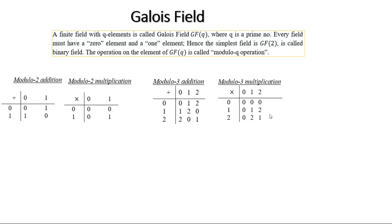We can perform modulo 3 multiplications. For example: 0 into 0 is 0, 0 into 1 is 0, 1 into 0 is 0, 1 into 1 is 1, 1 into 2 is 2, 2 into 0 is 0, 2 into 1 is 2, 2 into 2 is 4. When you count, that is 0, 1, 2, then 1, 0.